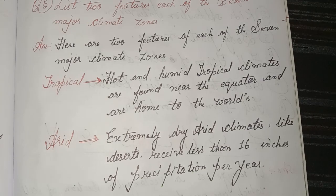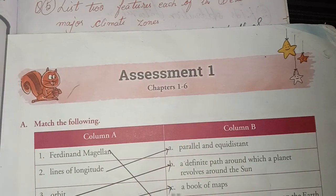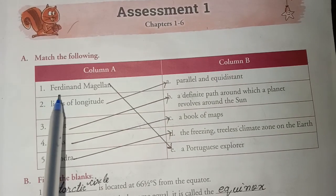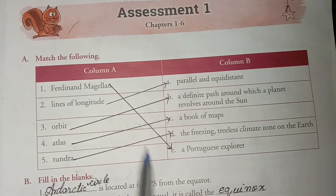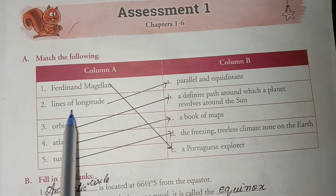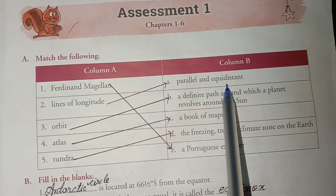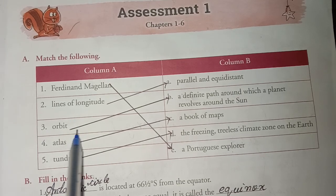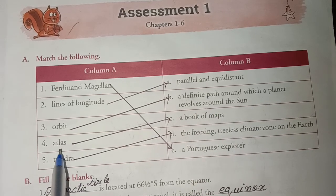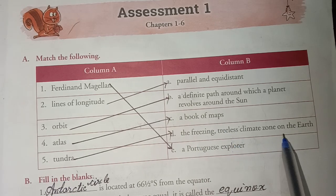Assignment one, chapters one to six. Match the following. Column A to Column B: First, Ferdinand Magellan — Portugal explorer. Second, lines of longitude — parallel and equidistant. Third, orbit — definite path around which a planet revolves around the sun. Fourth, atlas — a book of maps. Fifth, tundra — the freezing treeless climate zone on the earth.